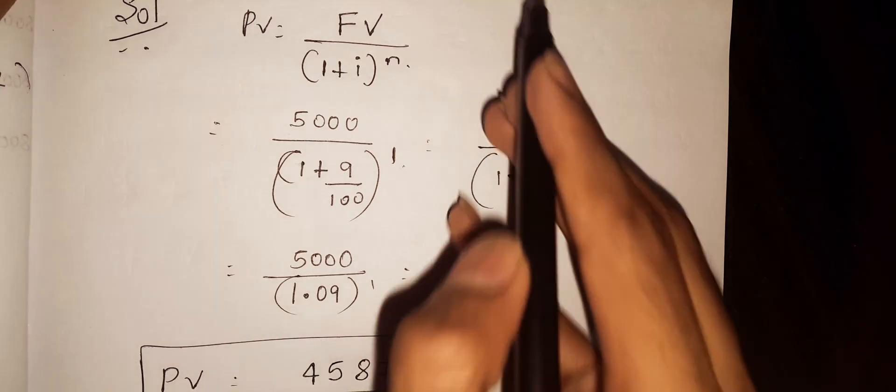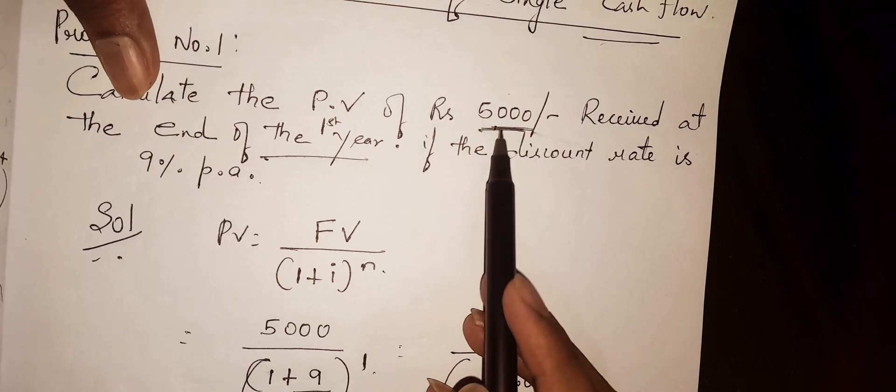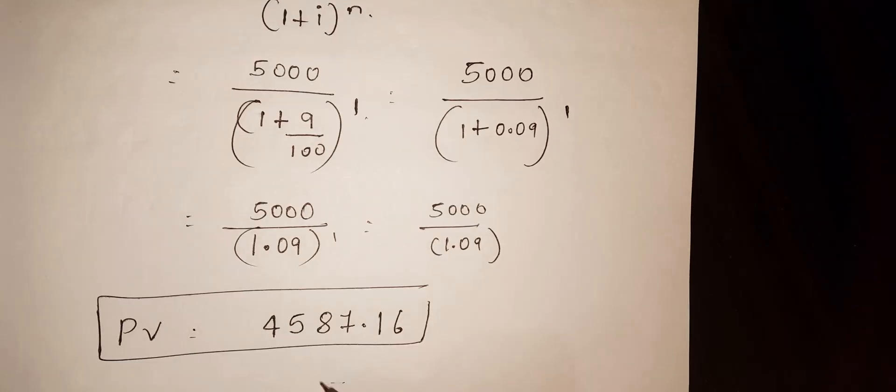So, if we receive 5,000 rupees one year from now, the present value is 4587.16. Hope you have understood how to solve this problem.